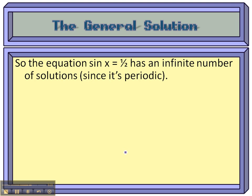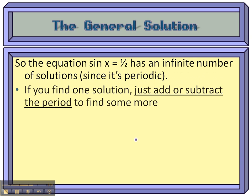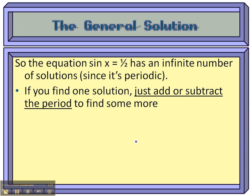Conclusion here. Any trig equation like sine x equals a half has an infinite number of solutions since it's periodic. So if you find one solution, just add or subtract the period to find some more. That's just the coterminal angle.